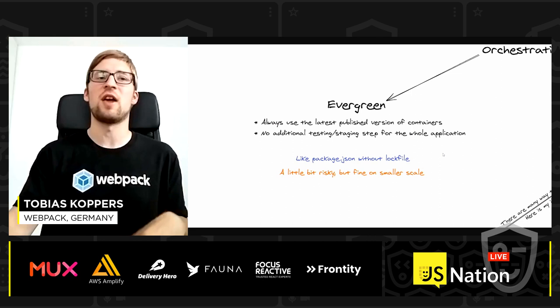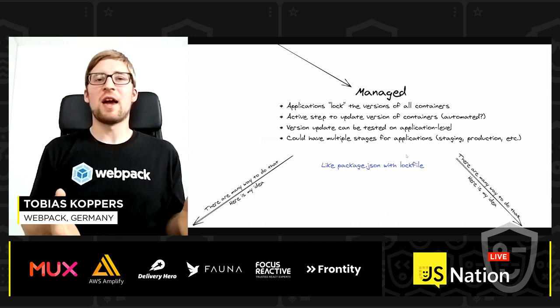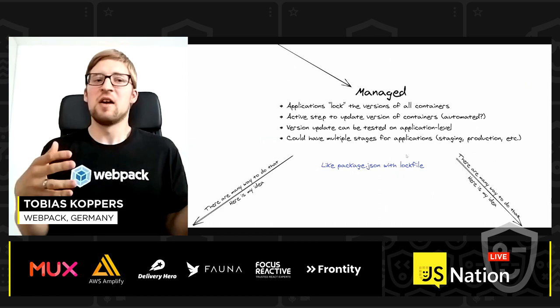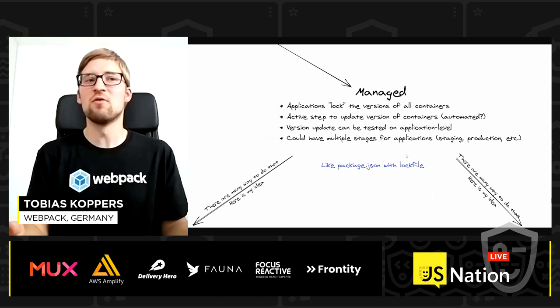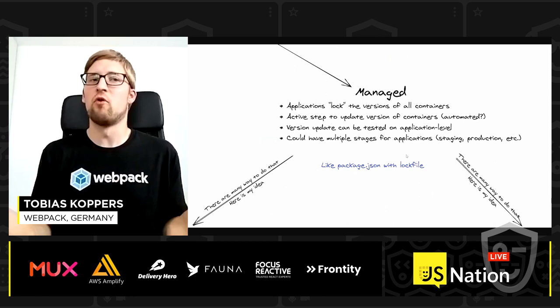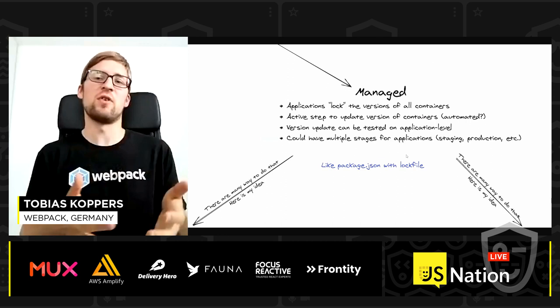The second orchestration approach is 'managed'. An application locks the version of the container it uses — like having a lock file. There's an active step to upgrade container versions, allowing you to validate that updated containers still work with your application. You can test at an application level across multiple stages like staging and production environments.